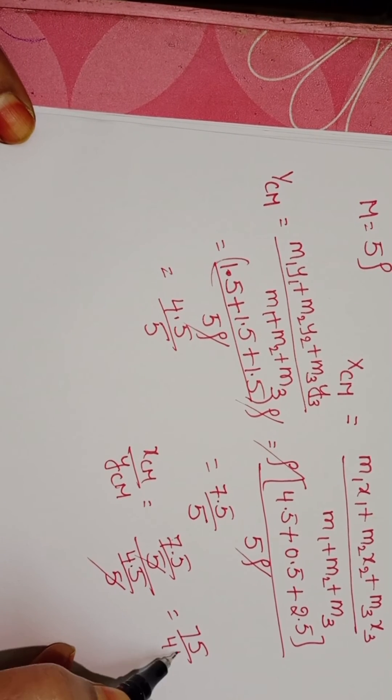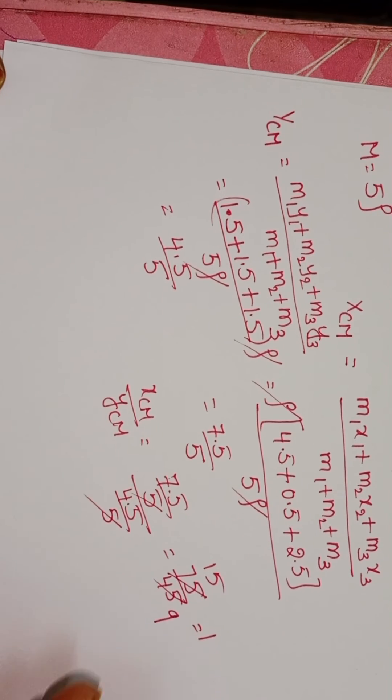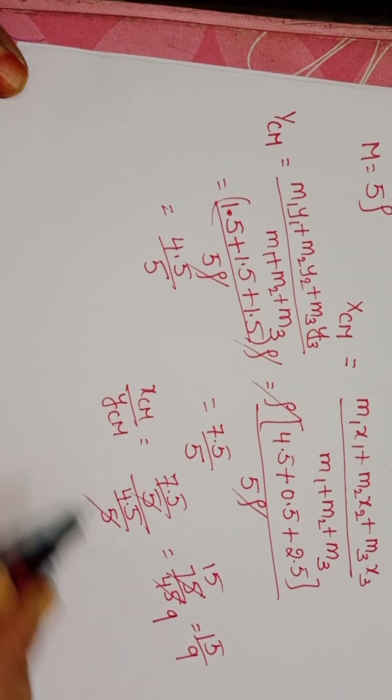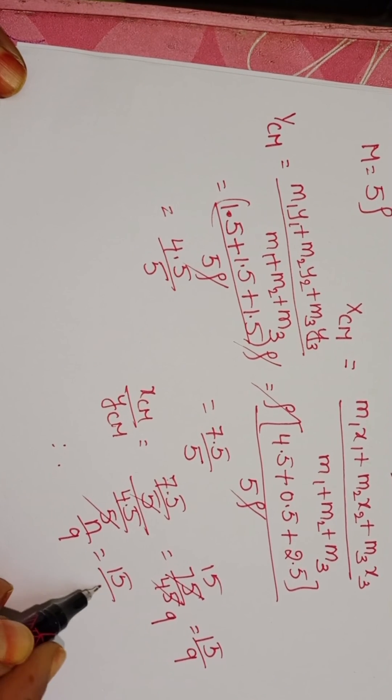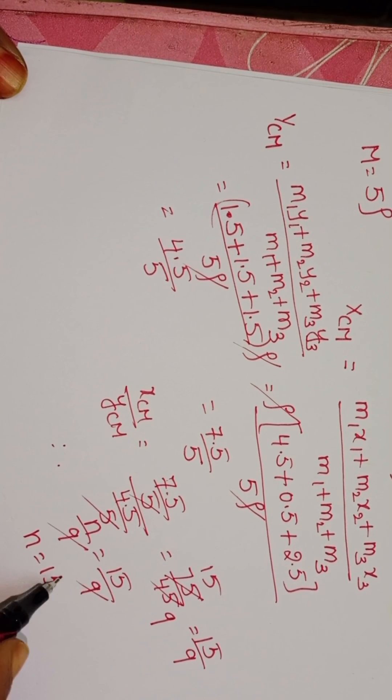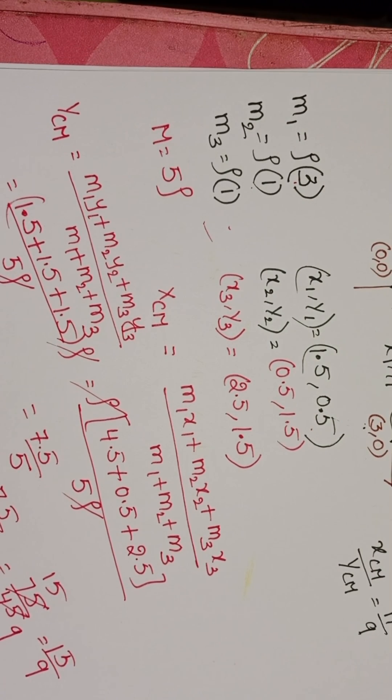It becomes 75 by 45, 5 fifteens, 15 by 9. Therefore, N by 9 equals 15 by 9. 9, 9 get cancelled. N equals 15.